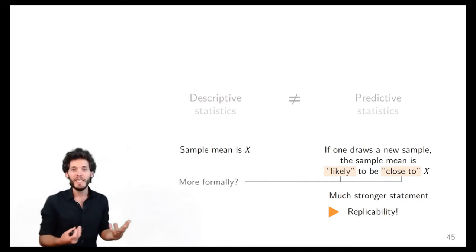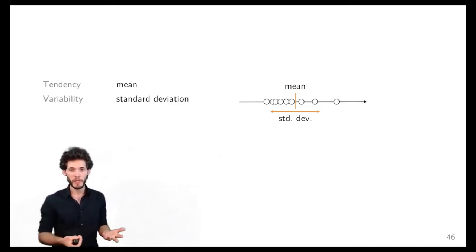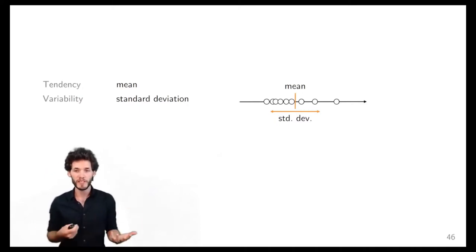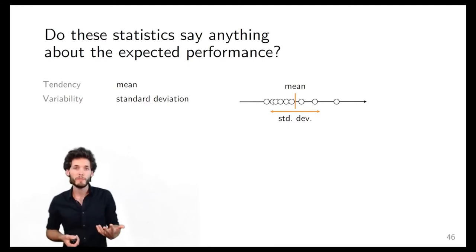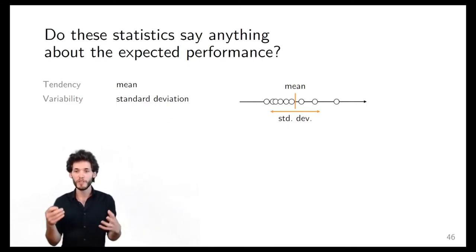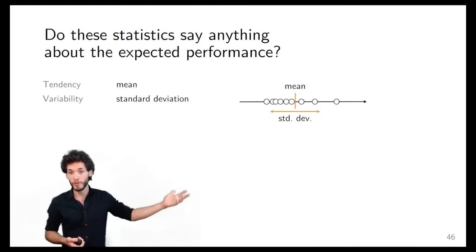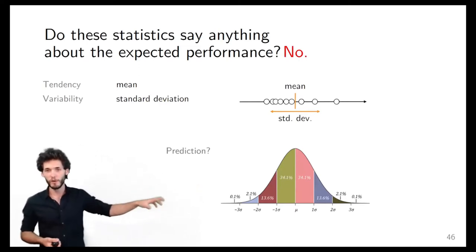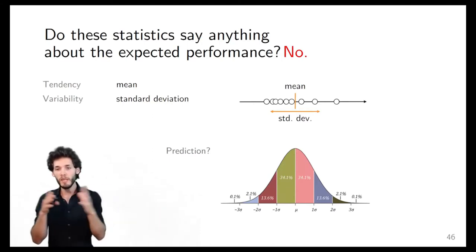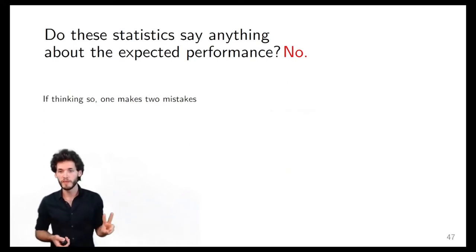Let's make 'likely to be close to x' more formal. When computing sample statistics, two measures very often used are the mean and the standard deviation — people do this because they've been told those are the basic statistics for central location and variability. But do those statistics actually say something about expected performance if you were to draw a new sample? You may think so, because we've all been taught in basic statistics that within mean ± one standard deviation you expect to find about 68% of samples.